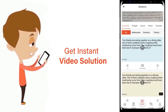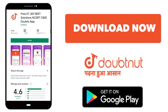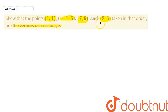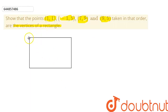Today we are going to discuss one question of coordinate geometry. In this question we need to prove that the points (1,1), (-1,5), (7,9), and (9,5), when taken in order, form the vertices of a rectangle. Let us first draw the quadrilateral made up by using all four of these points.